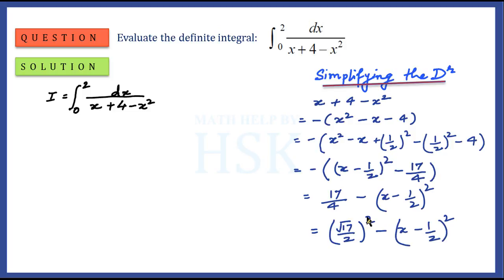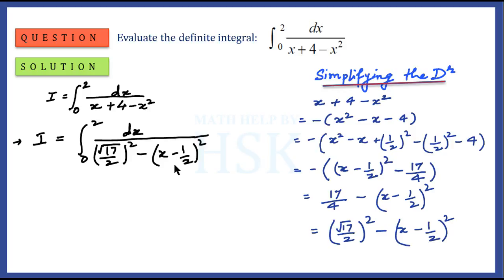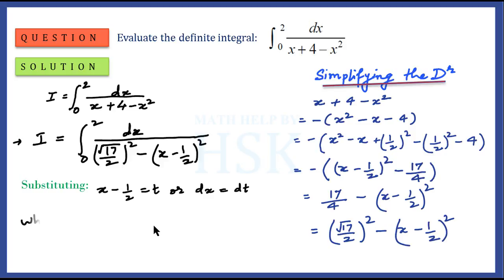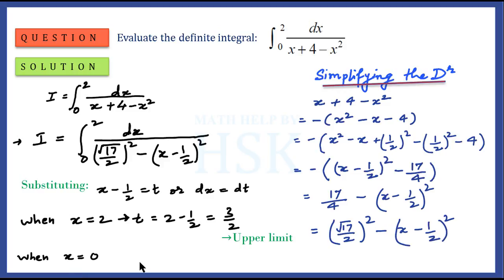In the next step, I place this simplified value into the expression for I. Then I perform a substitution: let x minus 1/2 equal to t, so on differentiating both sides dx equals dt. When x equals 2, t equals 2 minus 1/2, which is 3/2 — the new upper limit. When x equals 0, t equals minus 1/2 — the new lower limit.